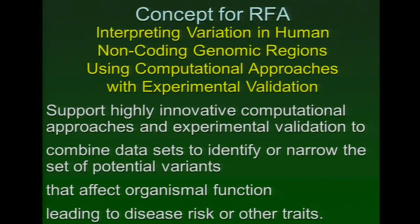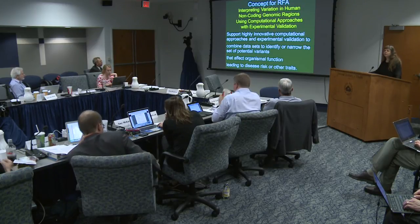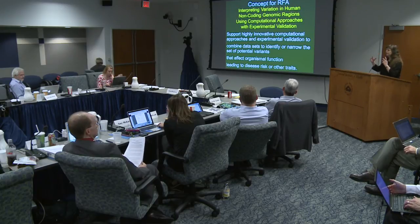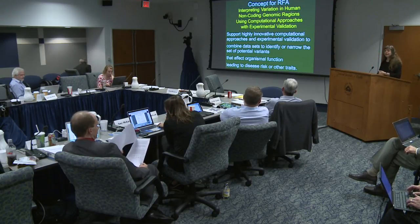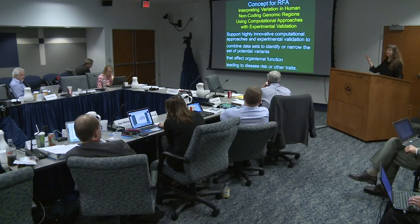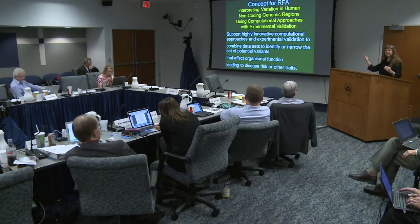We're getting to the concept: interpreting variation in human non-coding genomic regions using computational approaches with experimental validation. We're actually trying to address the really hardest questions here. There's easier function — like looking for transcription factor binding sites, an ENCODE-type project — but the question is which of these elements actually affect organismal function. Many variants probably have zero effect on function; Adam likes the metaphor of a perfectly functioning door that goes nowhere — it can work at the molecular level but not make a difference at the organismal level.